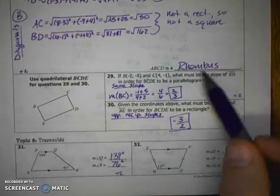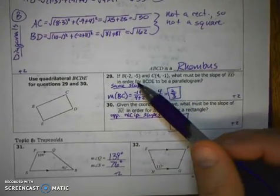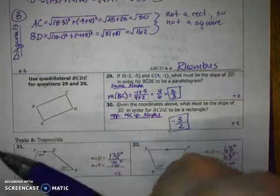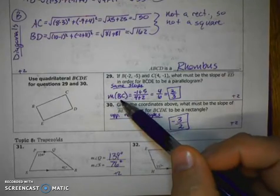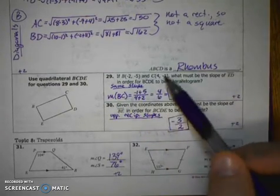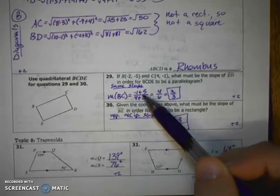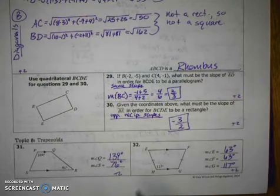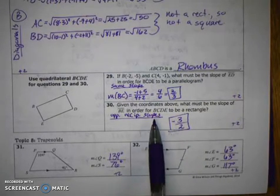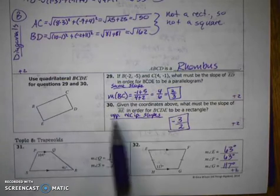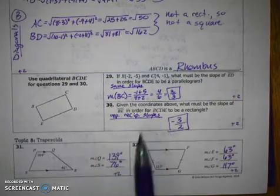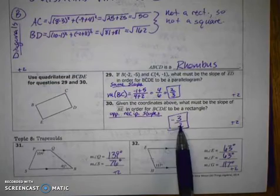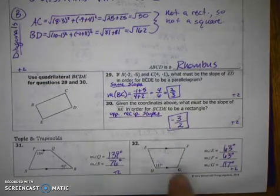Okay, on 29 and 30, again, using some coordinate geometry, using the slope formula for number 29. In order for it to be a parallelogram, we will want opposite sides to be parallel, which means they need to have the same slope. So we find the slope of BC, and that is the same slope as slope of ED. So we get two-thirds. But to find the slope of side BE, for this to be a rectangle, we want opposite reciprocal slopes. So I want that to be a right angle, so I take the opposite reciprocal of this slope, making it negative 3 over 2.